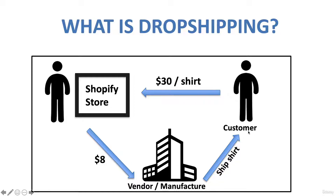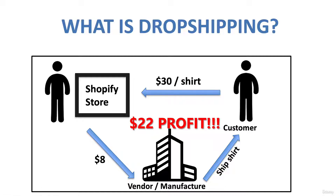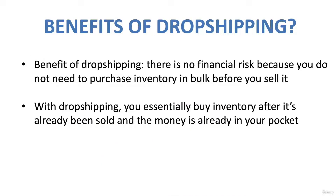So the customer gets the t-shirt for thirty dollars, and you get a profit of twenty-two dollars, because you only needed to spend eight dollars to purchase and ship the shirt to the customer. You're essentially making money without any physical inventory. You're not even responsible for fulfilling the products — all you have to do is purchase and tell the vendor to send it to the customer. That is dropshipping.